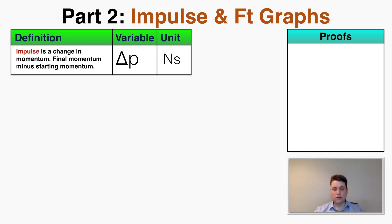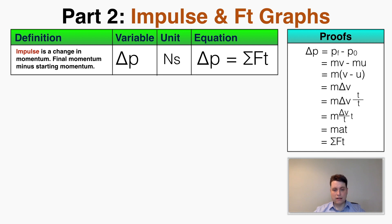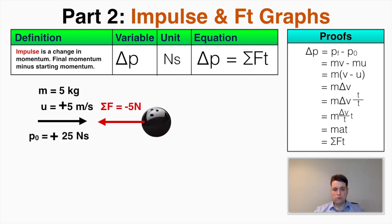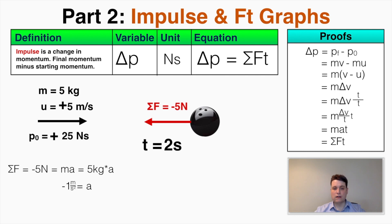The equation for impulse is not just final momentum minus initial momentum — it's also equal to the net force on the object multiplied by the time that force is applied. To prove this with the same ball example: the ball starts with momentum of 25 Newton seconds, and a force of negative 5 Newtons is applied for 2 seconds. Using F = ma with a mass of 5 kilograms, the acceleration is negative 1 meter per second squared for those 2 seconds.